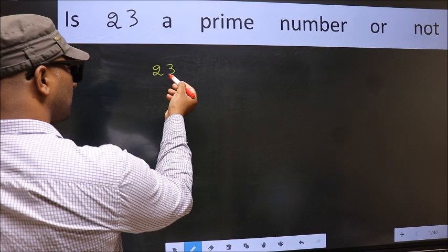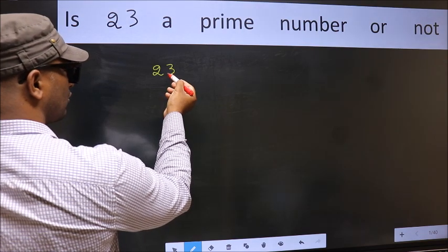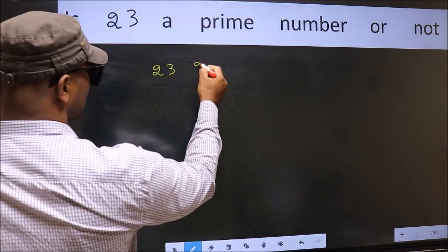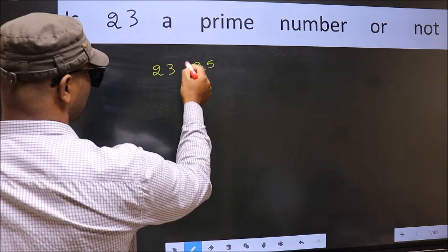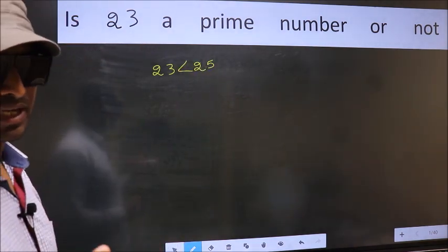Now you should write a perfect square number that is close to this, that is 25. This is your step 1.